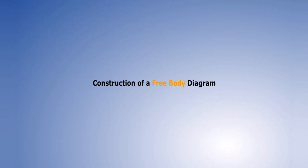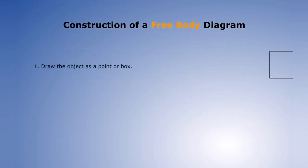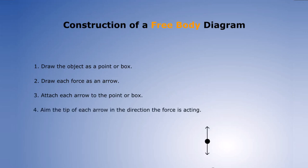Now let's look at the construction of a free body diagram. 1. Draw the object as a point or box. 2. Draw each force as an arrow. 3. Attach each arrow to the point or box. 4. Now aim the tip of each arrow in the direction the force is acting.